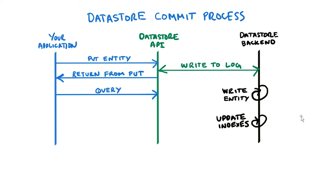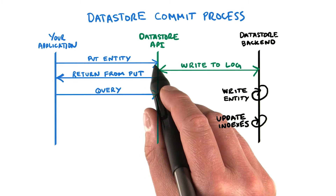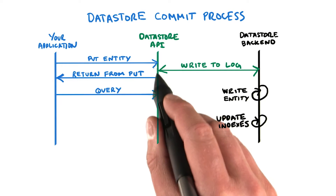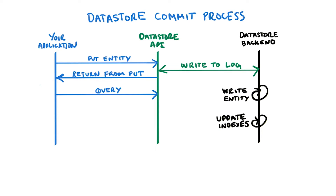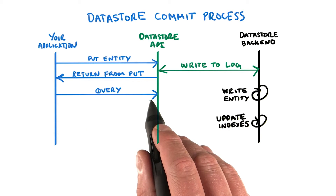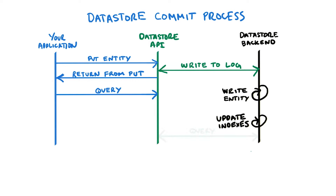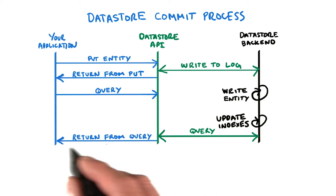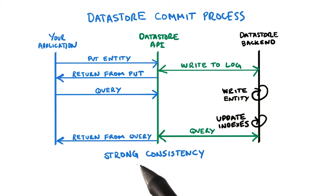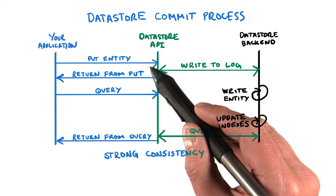Let's look at what happens in the case of strong consistency. In strong consistency, you're always guaranteed to get the data that has returned from a put operation towards the datastore API. When the query is received by the datastore API, it will see that there are pending updates for the data you are querying for. It will then wait and get the data once the datastore backend has finished, and then it returns that result. That's why it's called strong consistency — the result from queries will always be consistent with put operations performed earlier.